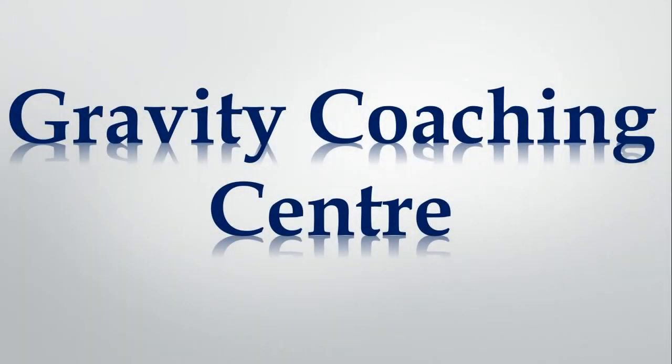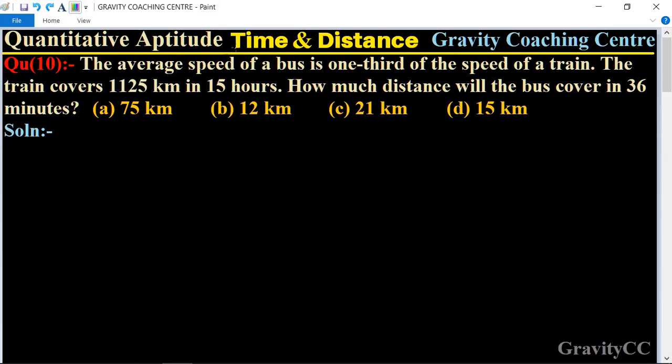Welcome to our channel Gravity Coaching Centre, Quantitative Aptitude chapter Time and Distance, Question Number 10. The average speed of a bus is one-third of the speed of a train, and the train covers 1125 kilometers in 15 hours. How much distance will the bus cover in 36 minutes?